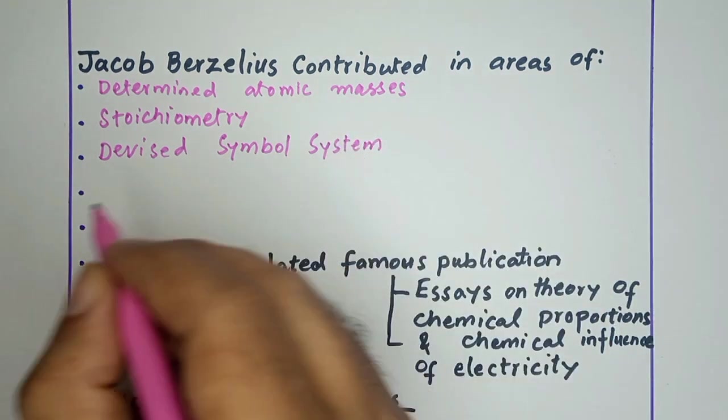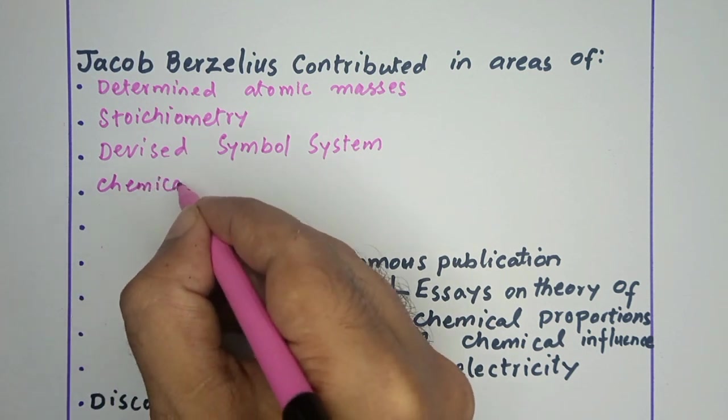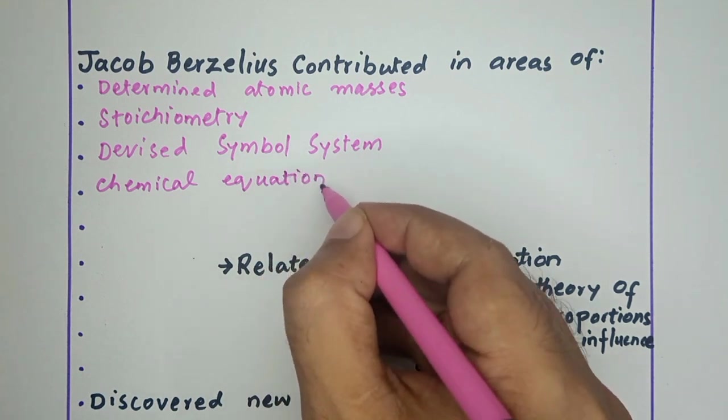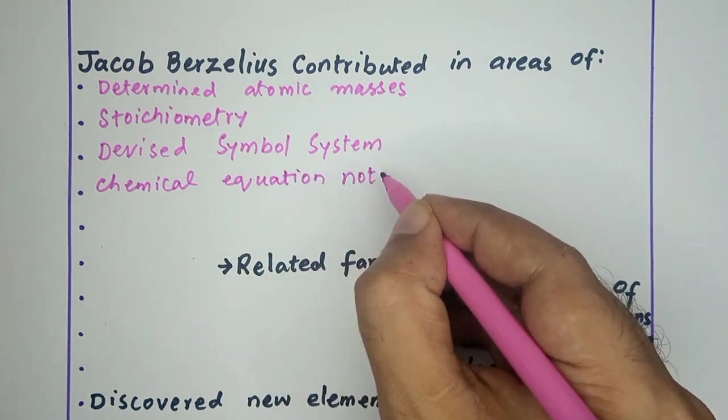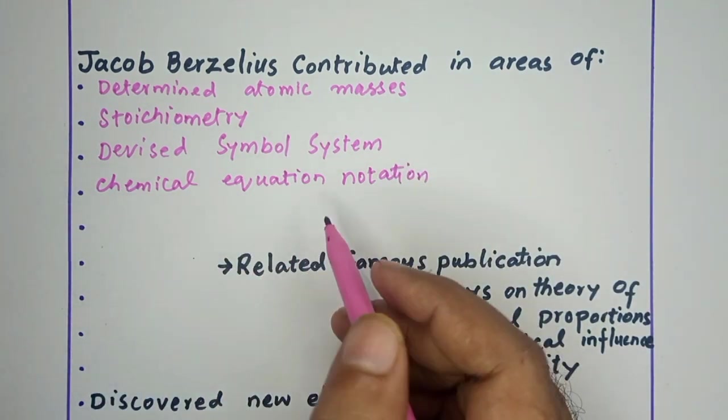With the help of the symbol system, we can write chemical equations. The notation of the chemical equation is with the help of the symbol system developed by Jacob Berzelius.